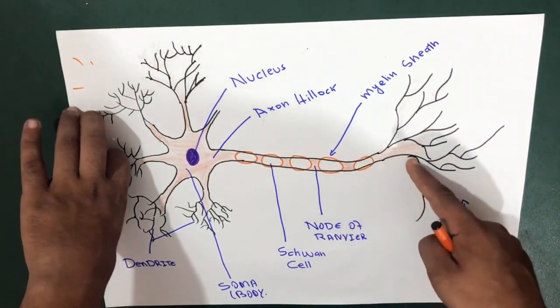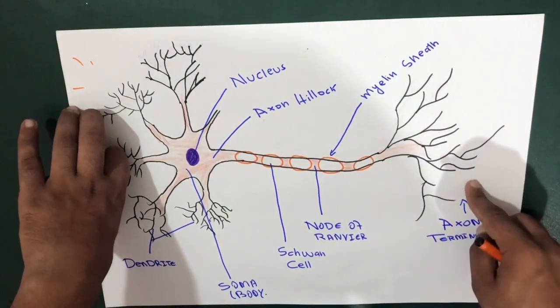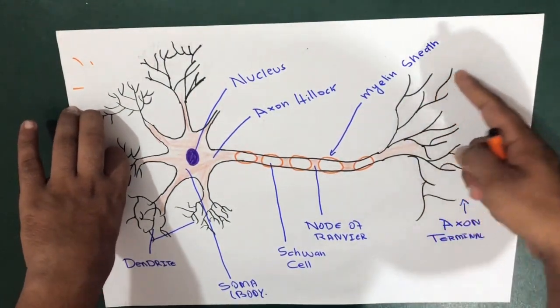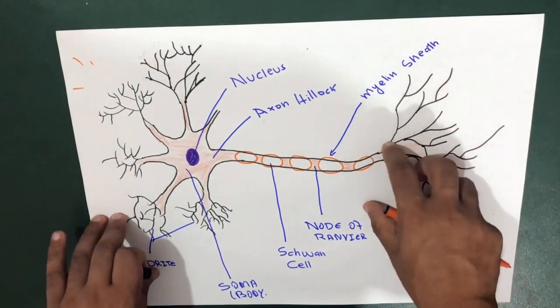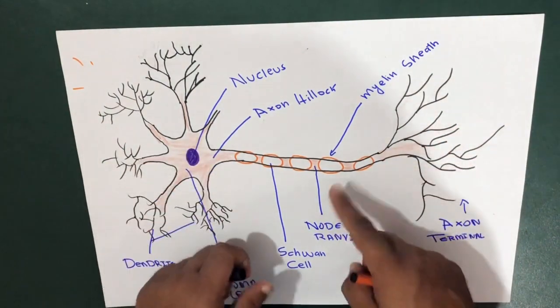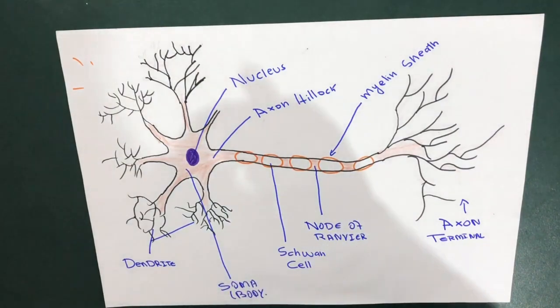the axon and reaches the terminal part, which is called the axon terminal. Further on, this information will be moving to other dendrites. There are a few other structures in this area.